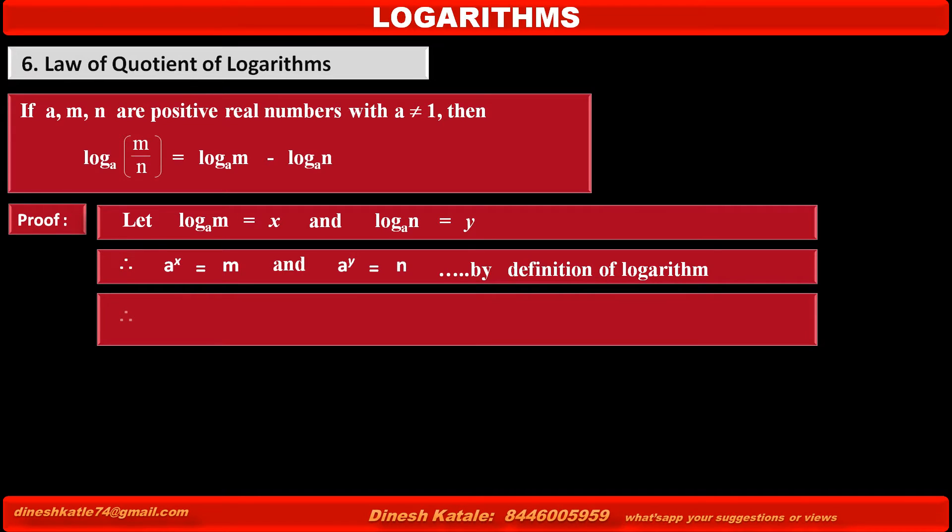Therefore, by taking the ratio of the above two equations, we get a raised to x upon a raised to y is equal to m upon n, by division of the above two equations.